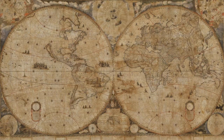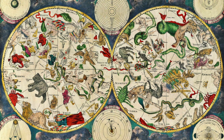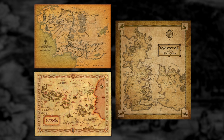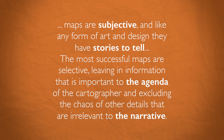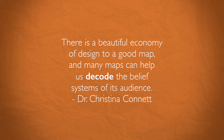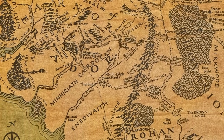Every map combines science, aesthetics, and technique in order to represent a spatial understanding of things, concepts, or events in the human world. But what about maps depicting fictional worlds, such as Lord of the Rings' Middle-earth, The Chronicles of Narnia's Narnia, and Game of Thrones' Known World? The most successful maps are selective, leaving in information important to the agenda of the cartographer and excluding details irrelevant to the narrative. There is a beautiful economy of design to a good map, and many maps can help us decode the belief systems of its audience.